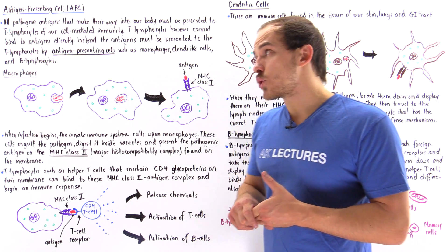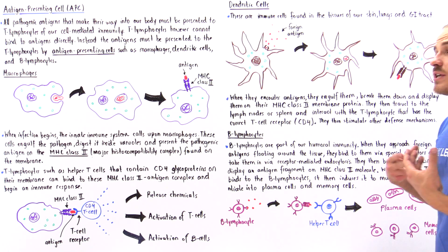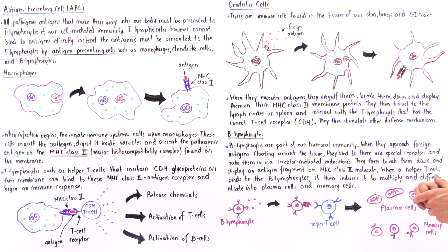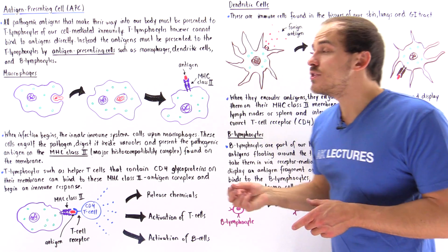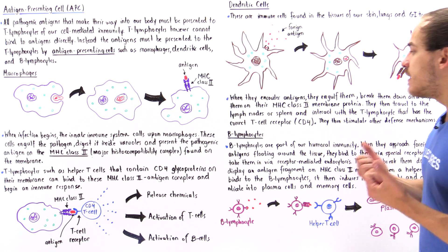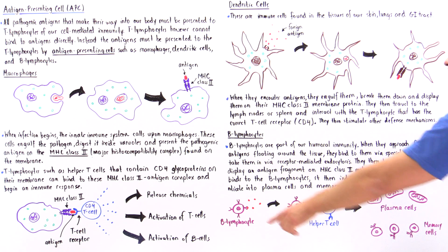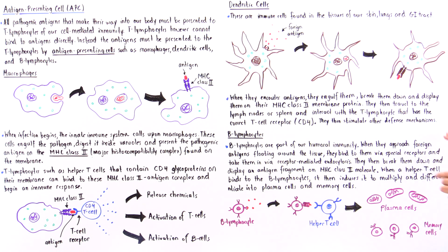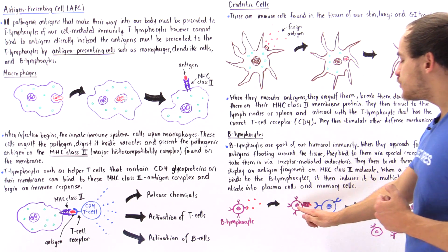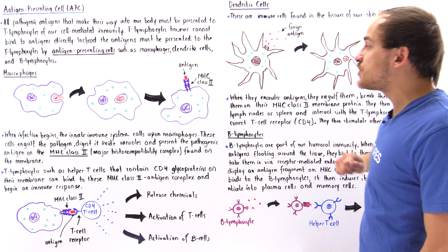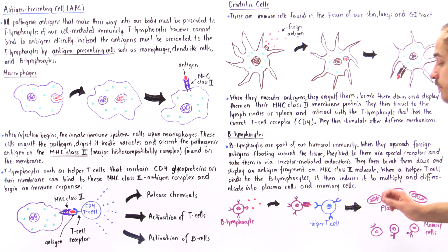B lymphocytes are immune cells of our humoral immunity — the antibody-mediated immunity. B lymphocytes can also engulf and take in antigens from different types of pathogens found inside our tissue. When they approach foreign antigens floating around in our tissue, they bind to them via special receptors and then undergo receptor-mediated endocytosis, taking that antigen into the cell. Once that happens, these B lymphocytes build the MHC class II complex and place that antigen onto that complex.